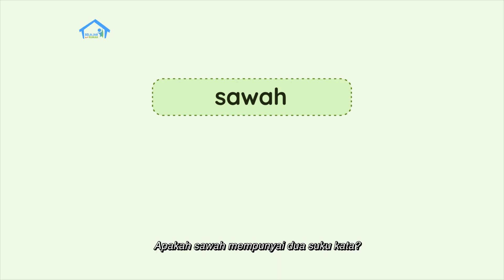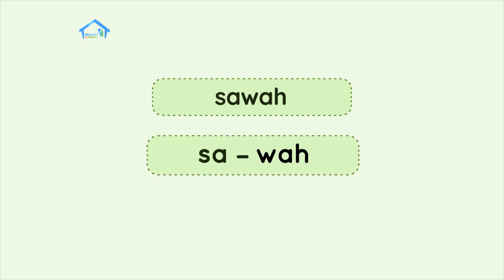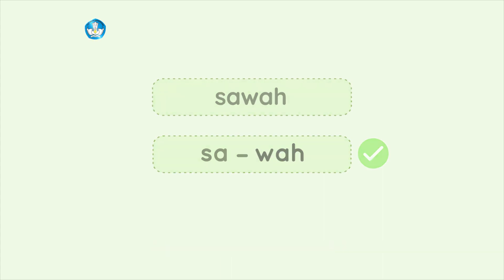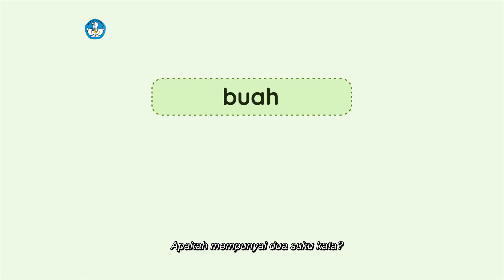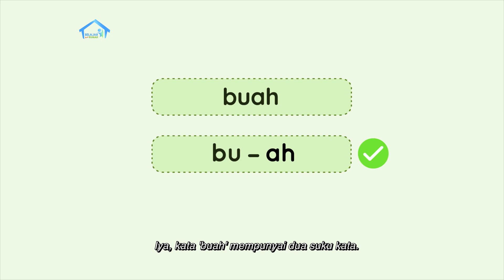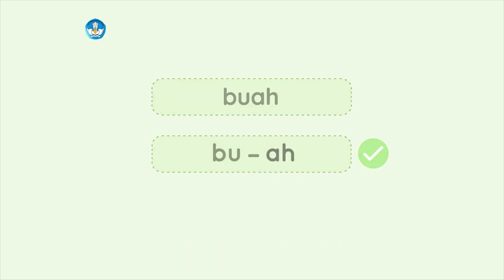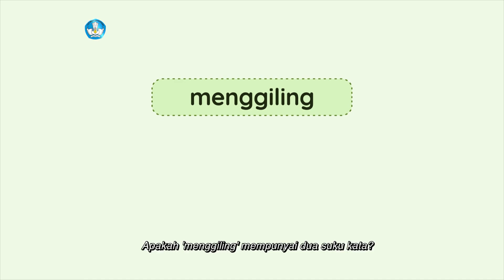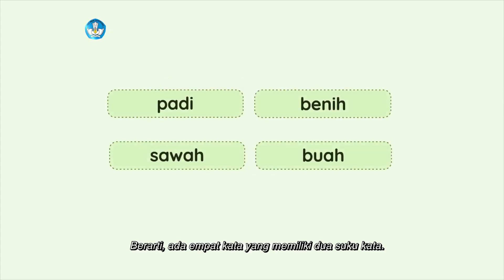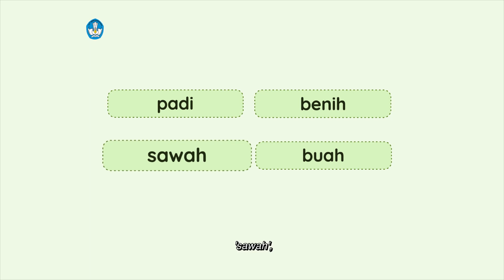Kemudian kata sawah. Apakah sawah mempunyai dua suku kata? Sa-wah — iya, kata sawah mempunyai dua suku kata. Berikutnya kata buah. Apakah buah mempunyai dua suku kata? Bu-ah — iya, kata buah mempunyai dua suku kata. Lalu kata terakhir, menggiling. Apakah menggiling mempunyai dua suku kata? Meng-gi-ling — ada tiga suku kata, bukan dua. Berarti ada empat kata yang memiliki dua suku kata, yaitu kata padi, benih, sawah, dan buah.